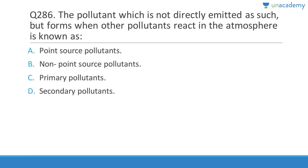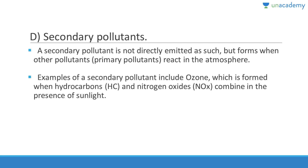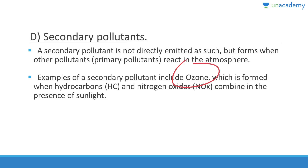Question 286: Pollutants not directly emitted but formed when other pollutants react in the atmosphere are called secondary pollutants. They are the result of interaction of primary pollutants. Answer is D. Examples of secondary pollutants include ozone, which forms when hydrocarbons and nitrogen oxides combine in the presence of sunlight.